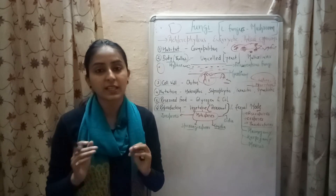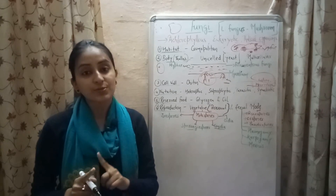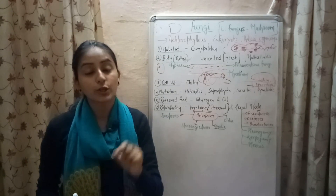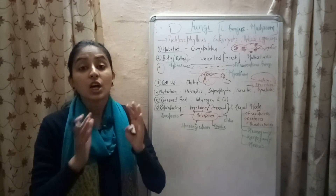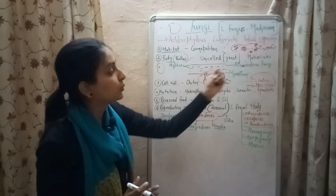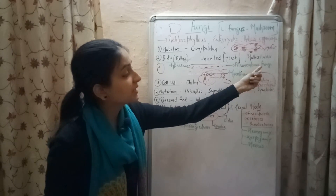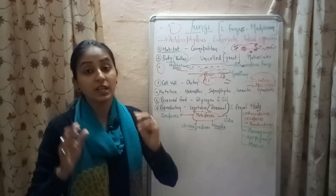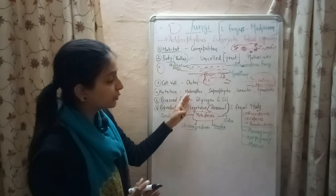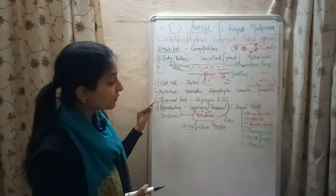Let's quickly revise: Fungi includes achlorophyllous, eukaryotic, and thaloid organisms. They are cosmopolitan in nature, meaning they occur everywhere. The body of fungi is known as thallus, which can be unicellular or multicellular. In some multicellular fungi, the body is arranged in a thread-like structure known as hyphae, and such fungi are known as filamentous fungi. Network of hyphae is known as mycelium. Fungi are heterotrophic — they can be saprophytic, parasitic, or symbiotic. Cell wall is made of chitin. Reserve food is glycogen and oil.